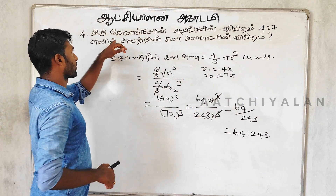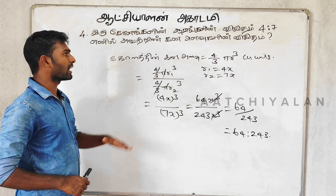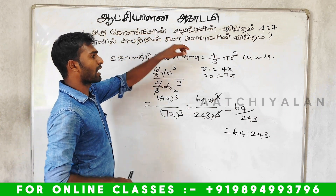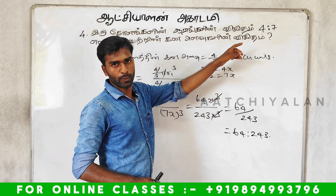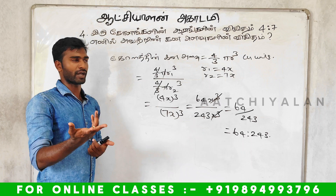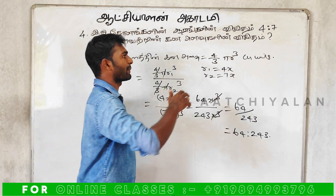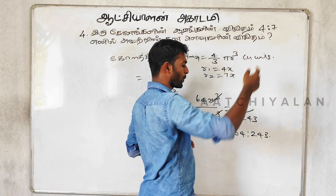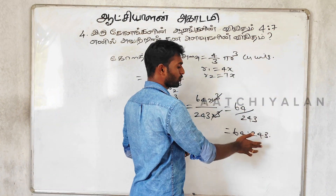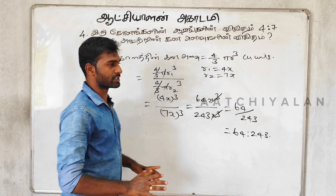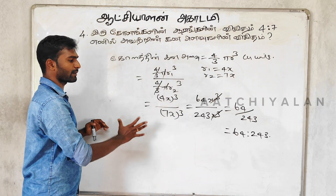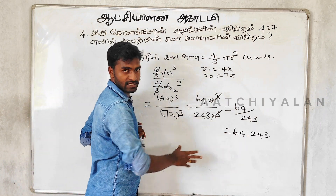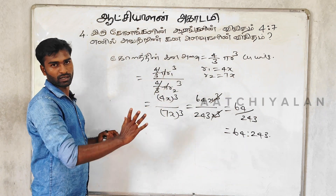What do you do with the shortcut? If you give the code, it will be r1 cube to r2 cube. 4 cube is 64, 7 cube is 343. If you use the shortcut, that is the answer. That is the method.